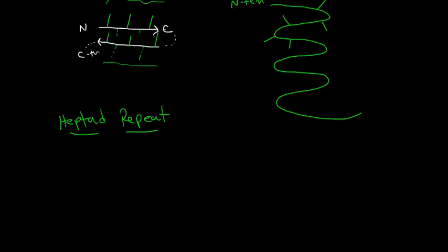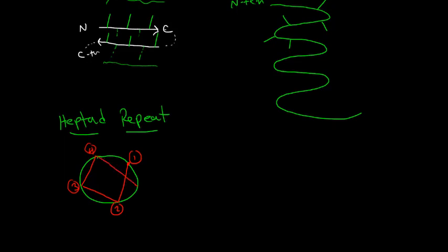The idea with the heptad repeat is that if we think about an alpha helix looking at it from the top down, we have seven different positions. Starting at position one, then position two, three, four — kind of making a box — and then position five moves between one and two, then position six, and position seven. We then repeat and go back to position one. So we have these seven specific locations on the exterior of an alpha helix where the side chains are oriented.